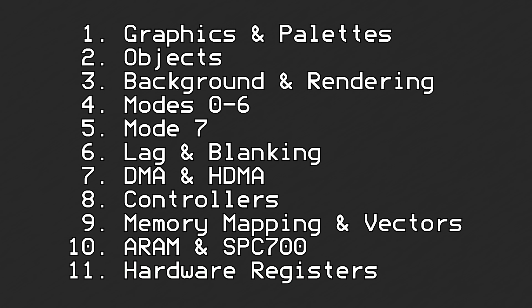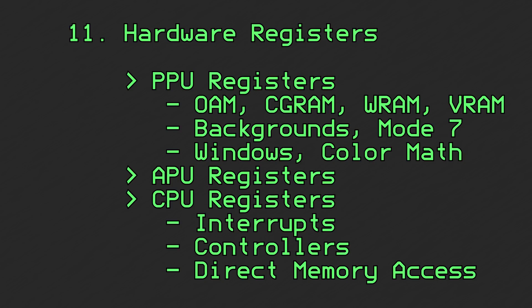This video is part 11 in a series about Super Nintendo Entertainment System features. As the last chapter of the first unit, this video will be more of a reference than an explanation. Most of what is described here can be found in more detail in the earlier videos. I'll list off every hardware register in memory pages 0x21, 0x40, 0x42, and 0x43, and very briefly explain their purposes. Each register will have a small note showing which video in this series you can go to for more information about that particular feature.